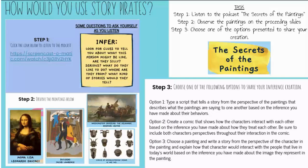The first option was to type a script that tells a story from the perspective of the paintings, describing what the paintings are saying to one another based on the inference made about their behaviors. I tell my students: you are a director and your job is to type a script from the perspective of the paintings. A script is like writing a drama — you need a cast of characters, speaking parts, and stage directions. Students take that and create their own script and story.